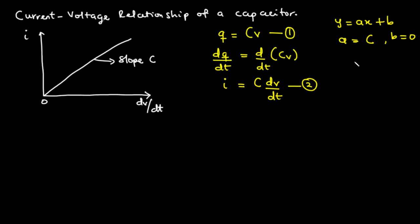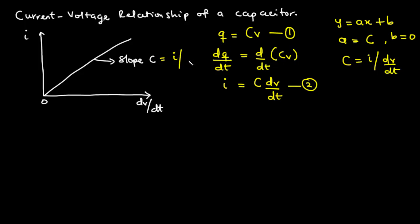From equation two, we can also express the capacitance as C = i divided by dV/dt. This gives us a direct formula for capacitance in terms of current and the rate of change of voltage.